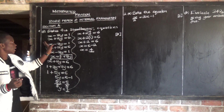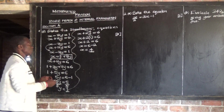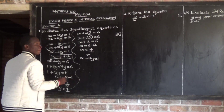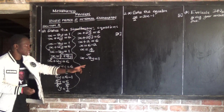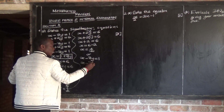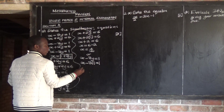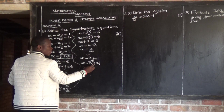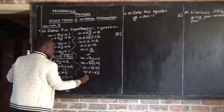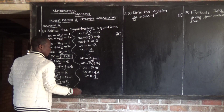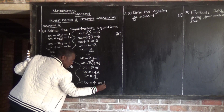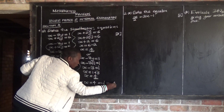Or you can use equation 1 to verify. Equation 1 is x minus 3y equals positive 1. Where there is y, put 1: x minus 3 times 1 equals 1, so x minus 3 equals 1, giving x equals 1 plus 3, which is positive 4. Therefore, x is equal to positive 4 and y is equal to positive 1. This is the answer.